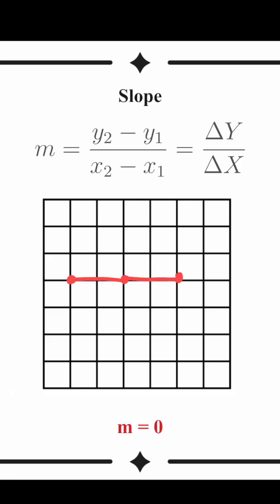This is a slope of zero because y is not changing as x changes. Looking at our equation, if delta y is zero, plugging in any number for delta x always gives us zero. So a completely horizontal line has a slope of zero.